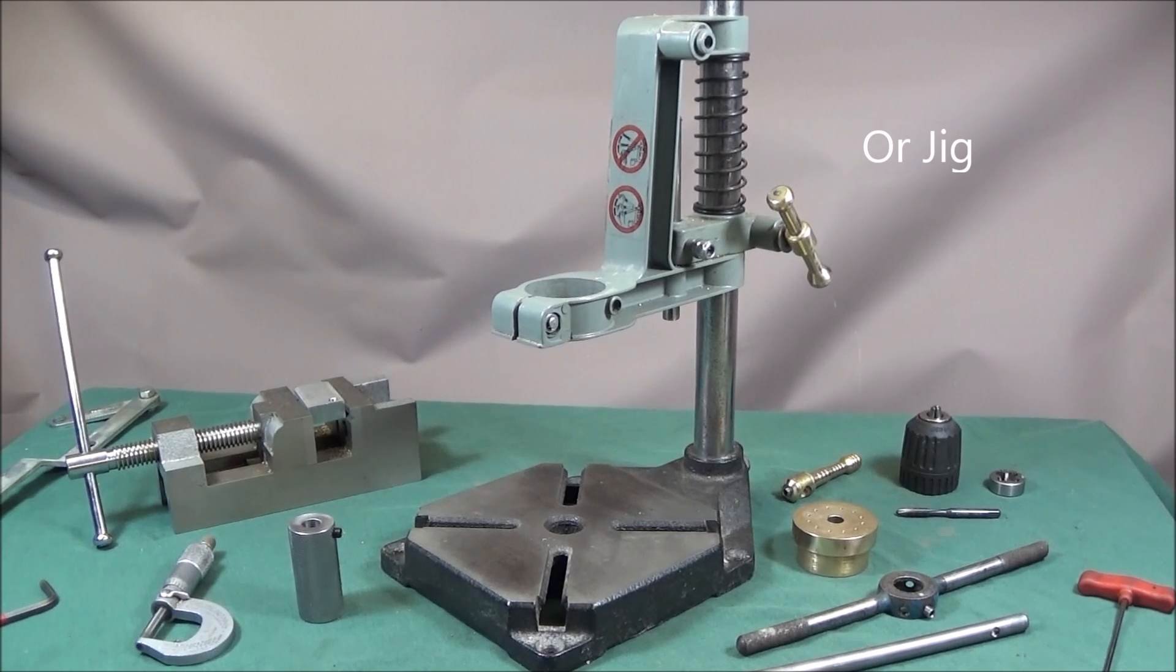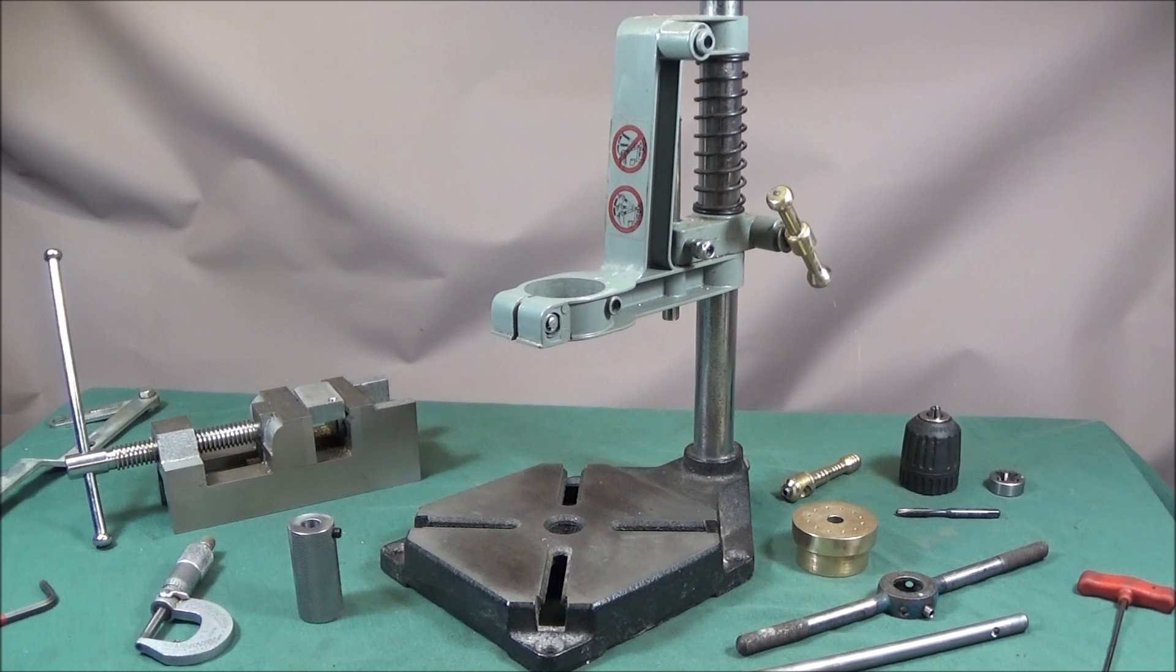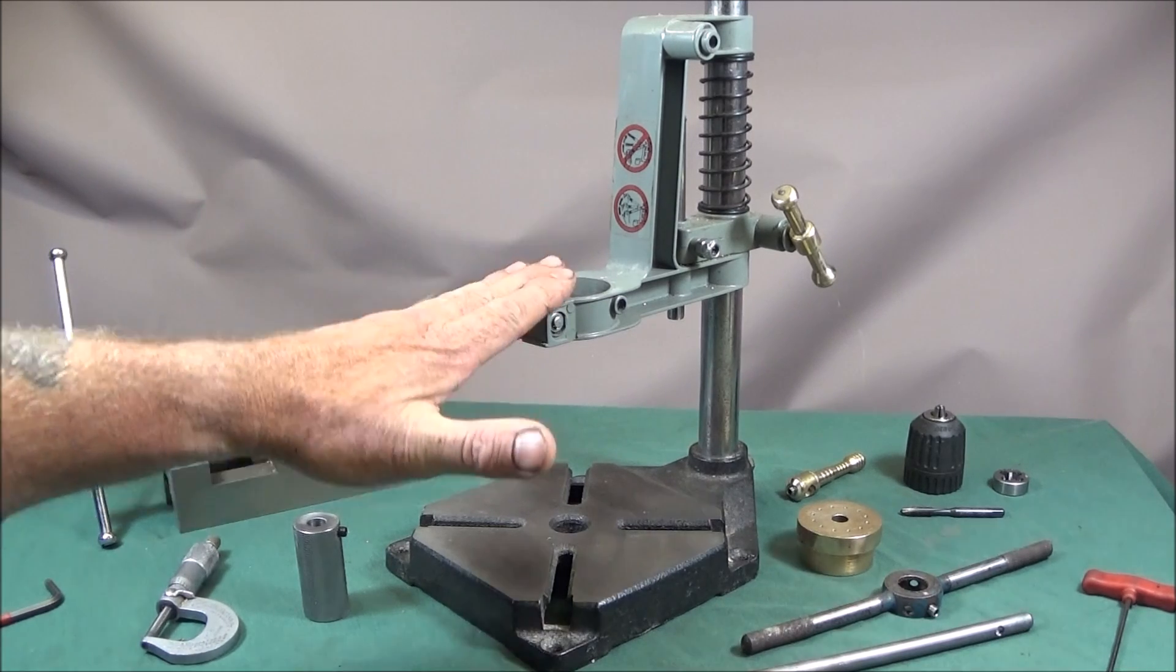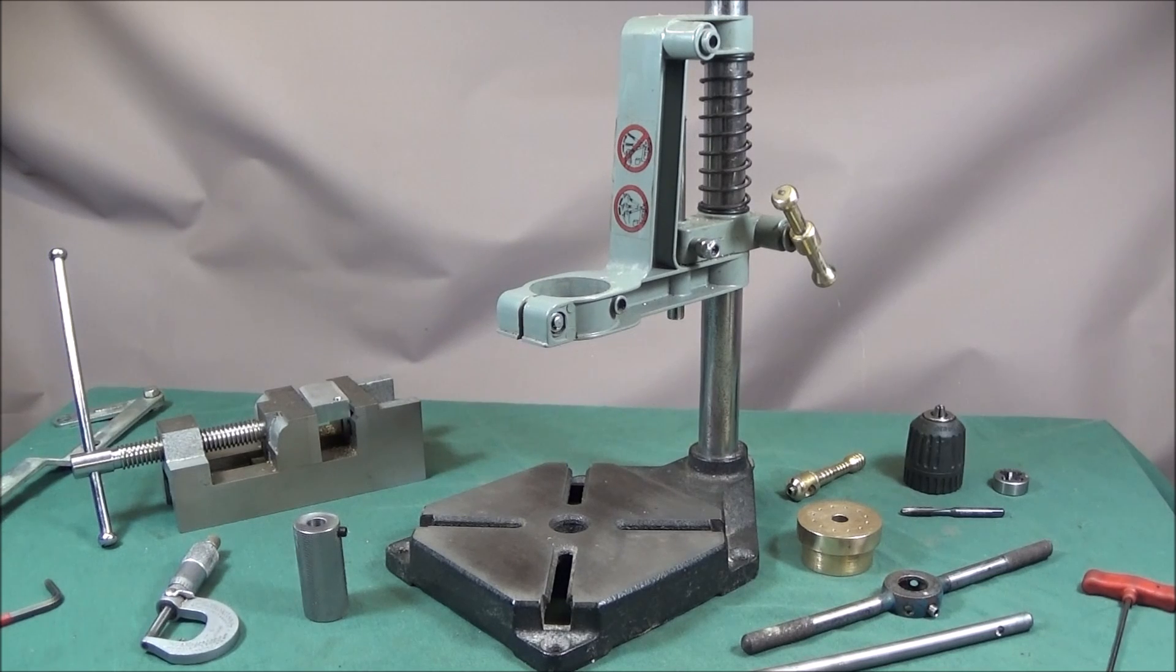A hand tapping fixture allows precise perpendicular tap to hole alignment plus reduces tap breakage that can easily occur when too much torque or side forces are applied. Now it's a very nice and easy project to make on the lathe and requires very little material to make a good quality tapping fixture.